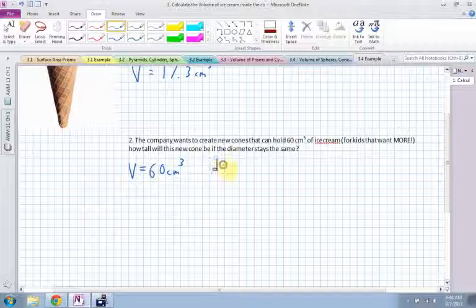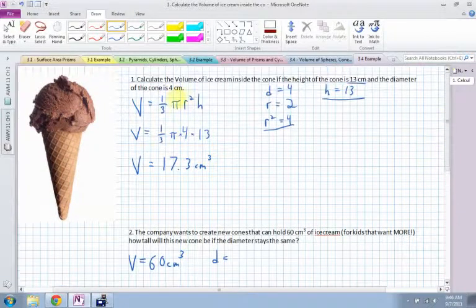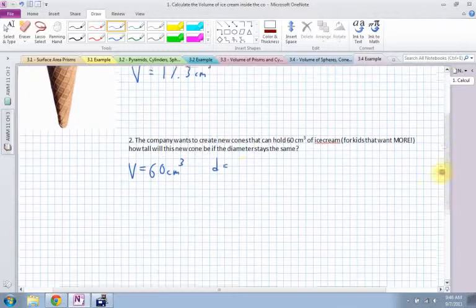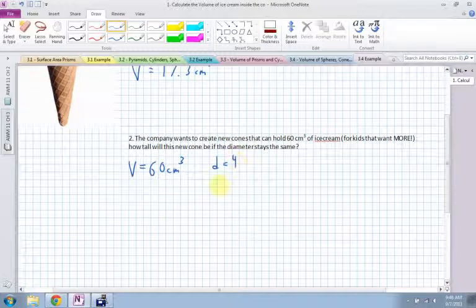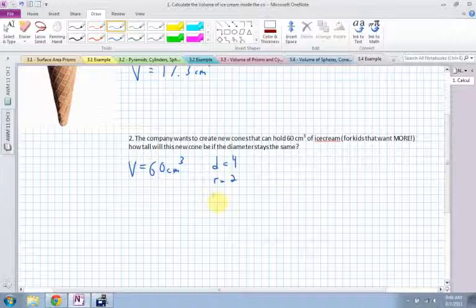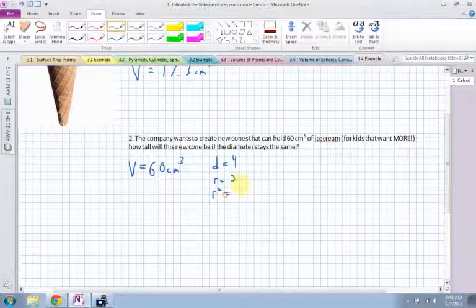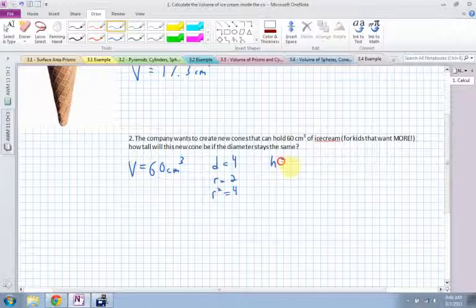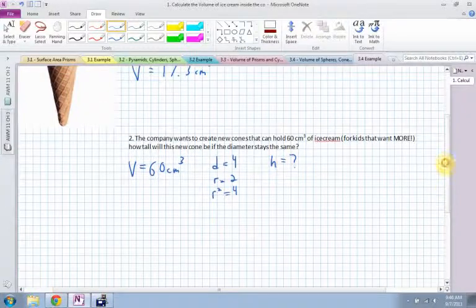So the diameter, again, is going to be exactly the same as the question before, which is 4, which means that my radius is 2, and my radius squared is going to be 2 squared, which is 4. The height, we don't know. The height is what we're trying to find.